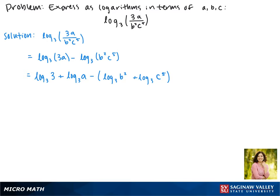Now we'll simplify this down by distributing that negative there. Also, we can rewrite the log base 3 of 3 as 1. So this gives us 1 plus the log base 3 of a minus the log base 3 of b squared minus the log base 3 of c to the fifth.